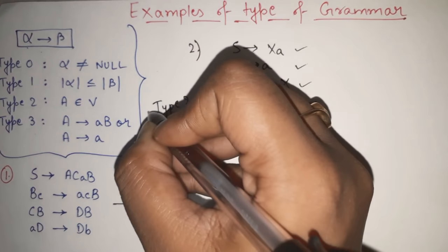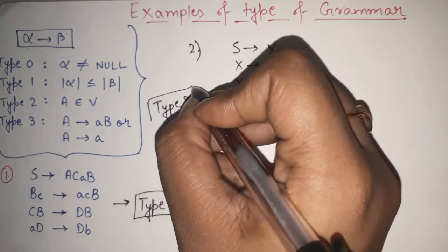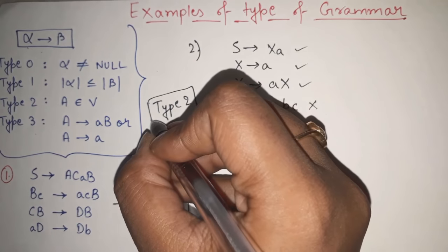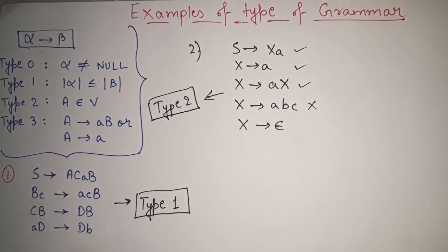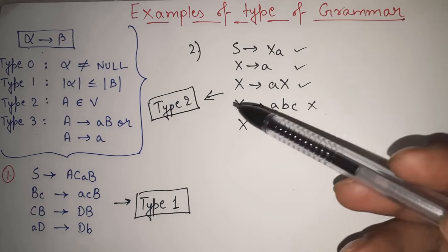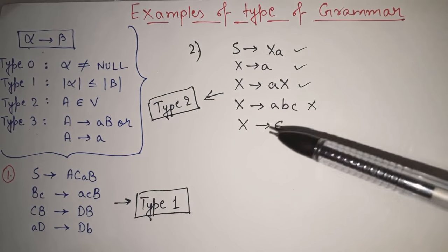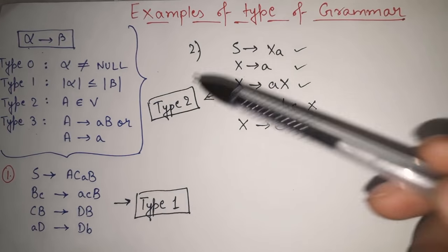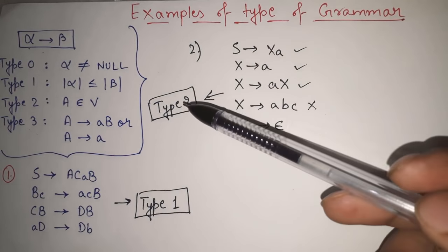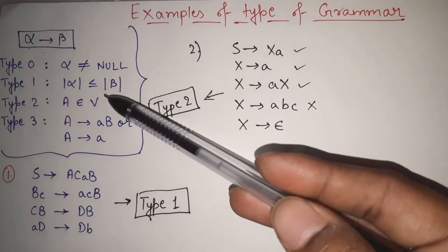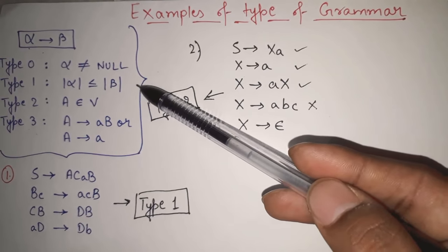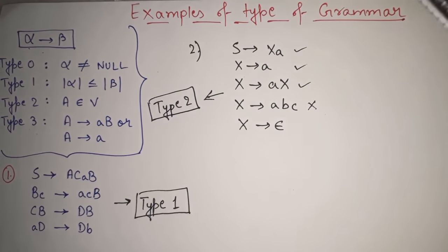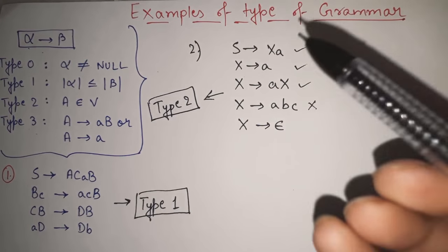So we will check type 2. In type 2, the only condition is that the LHS must belong to variable — LHS should be only one variable. Yes, all the LHS here are just a variable. No other critical condition exists in type 2. So I can simply say that this grammar is type 2 grammar — context free grammar. As it is type 2, it is automatically type 1 and type 0 also.